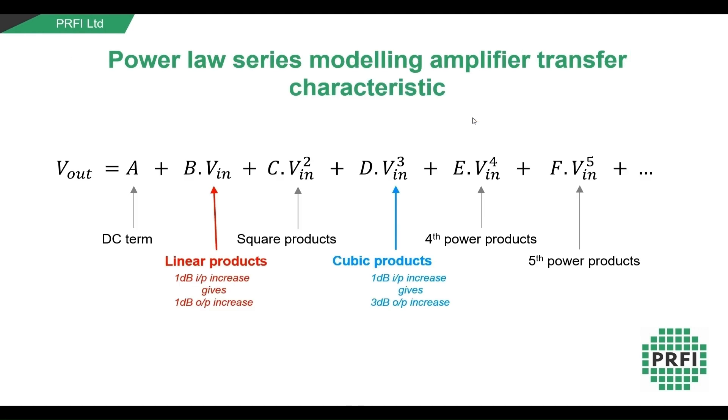One of the simpler ways to describe its non-linear behavior mathematically is as a power law series. This works well for amplifiers in their linear region where distortion products are low. At very low input levels the square, cubic and fourth order terms and so on are insignificant and the circuit is essentially linear with a gain B. As the input increases, contributions from these higher order terms start to increase and then the circuit is operating increasingly non-linearly.